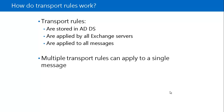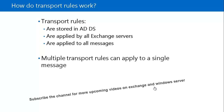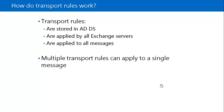If you want to apply more than one transport rule, multiple rules can be applied to a single message. Transport rules are listed in priority order to control the order of application. However, if a higher-priority rule applies to a message, a lower-priority rule can still apply. For example, one transport rule could add a disclaimer and a second transport rule could apply message moderation.